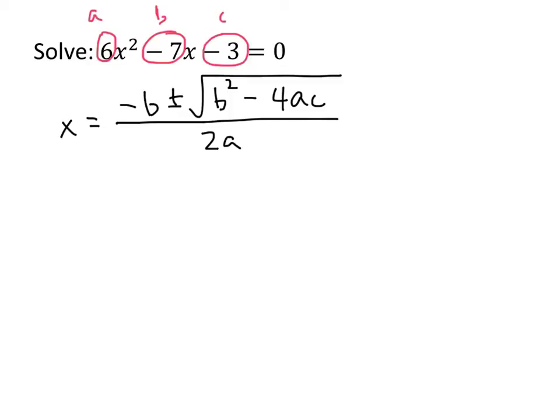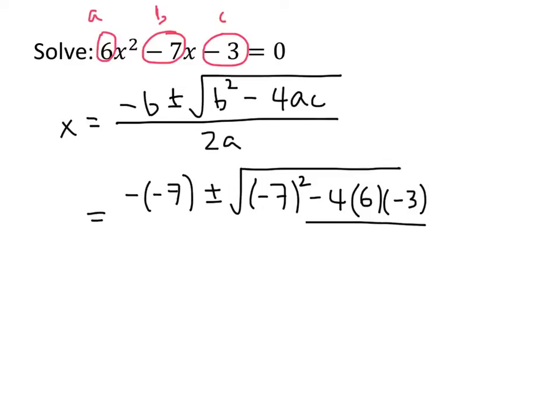So all we need to do is plug all these numbers into our expression. So we have negative b, which is negative negative 7, plus or minus the square root of b squared, so that's negative 7 squared, minus 4ac. So 4, a was 6, and c was negative 3. And that's all divided by 2a, which is 2 times 6.